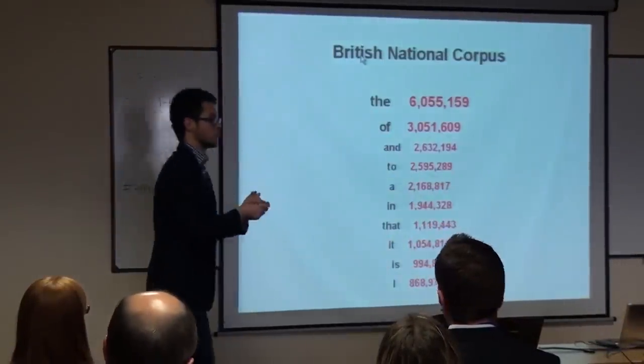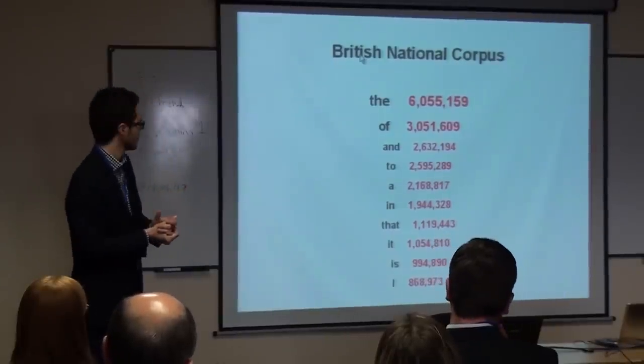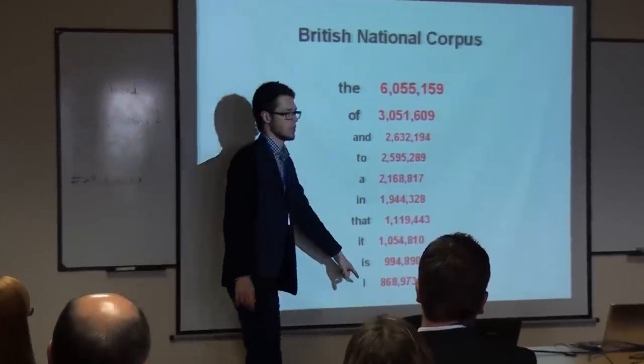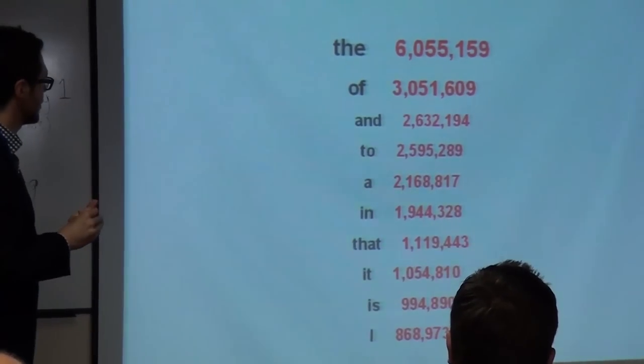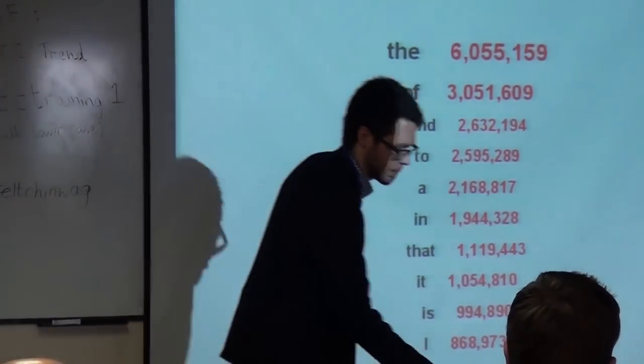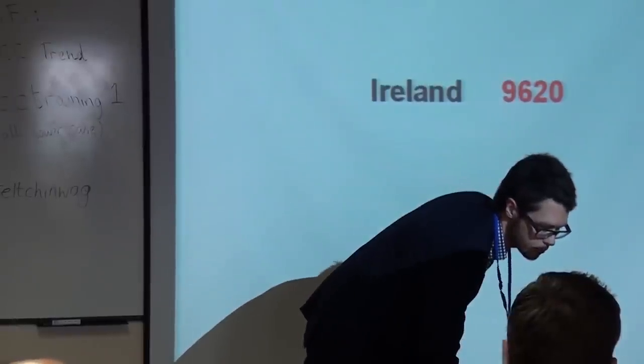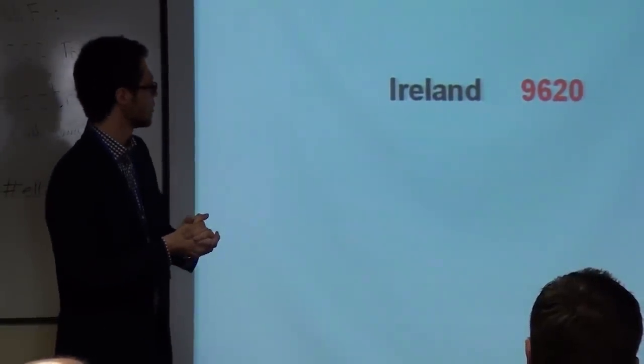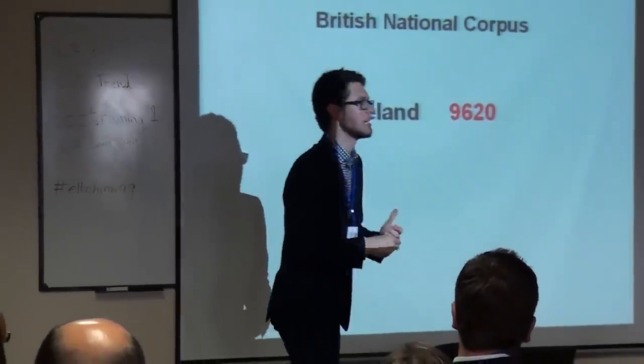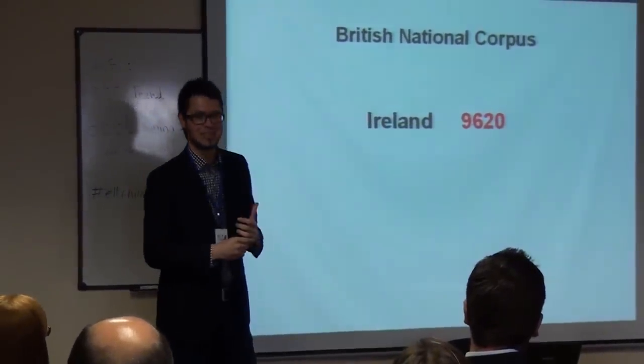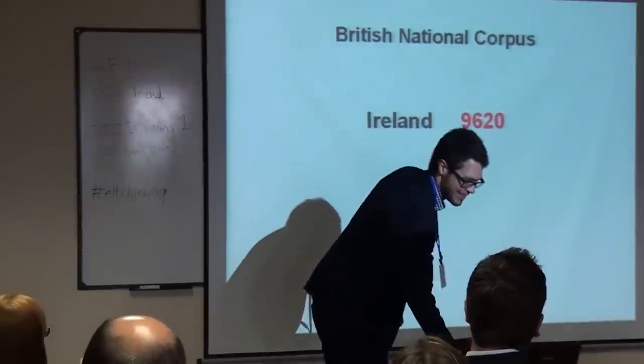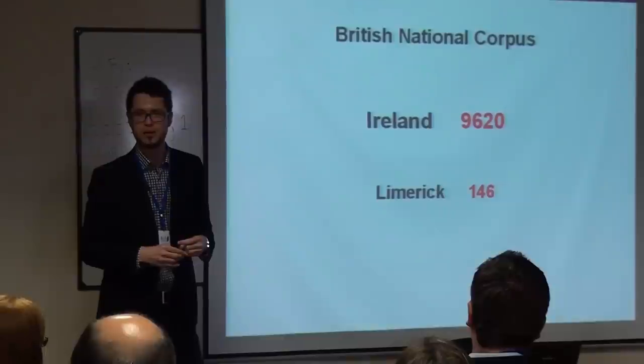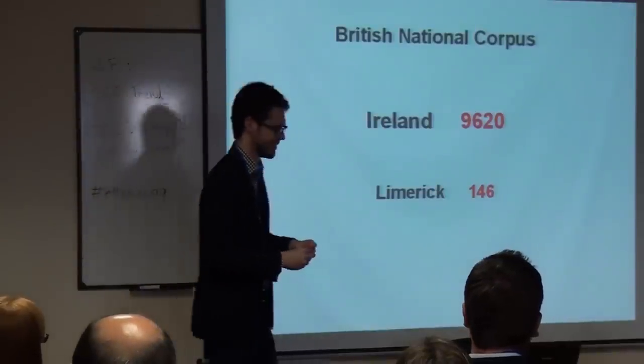And here are the numbers for the remaining eight words. As you can see, 'I' is the very last one there. So it's not that popular. And 'of' is the third one. Ireland is in the BNC, is mentioned almost 10,000 times. And what about Limerick? 80. That's quite a lot, isn't it?